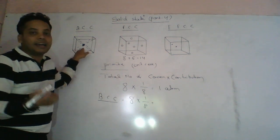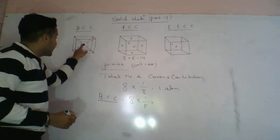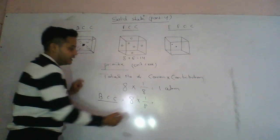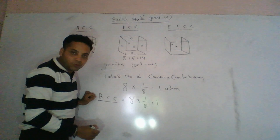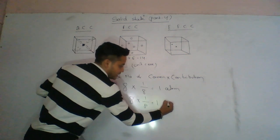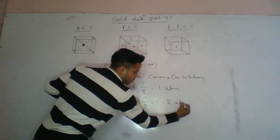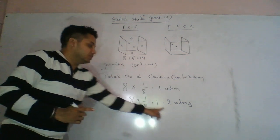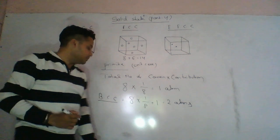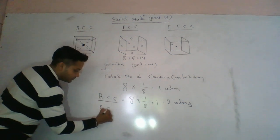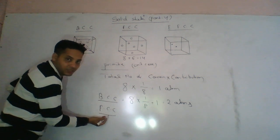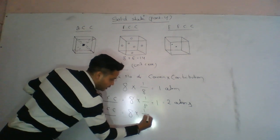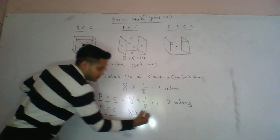So, if we write a crystal, we write plus 1, the answer is 2 atoms. So we write BCC — 2 atoms. So it means: 8 into 1/8 plus...